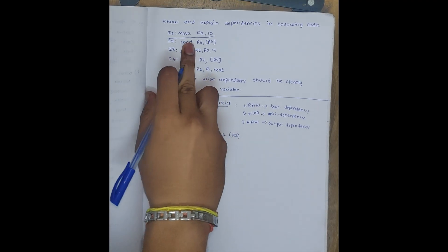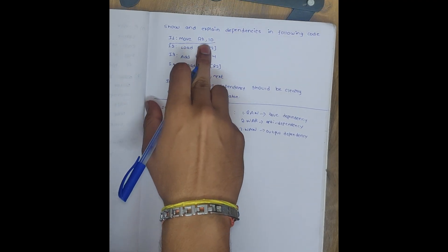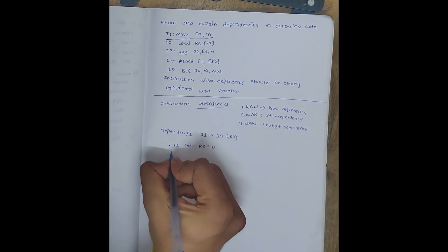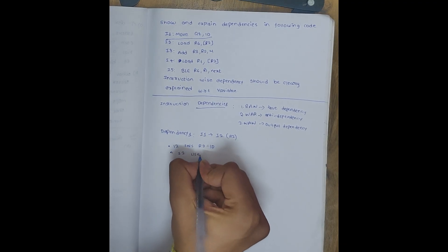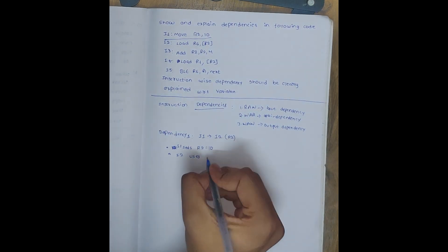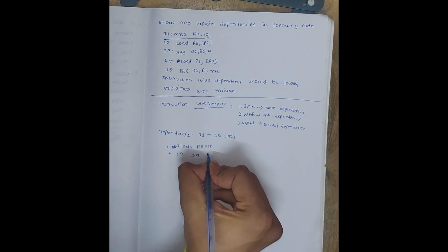In this instruction you can observe that R2 is assigned the value 10 - it assigns R2=10. Now what will happen? I2 uses - sorry, I1 - I am very sorry. I1 sets R2 equal to 10 and I2 uses R2's value.